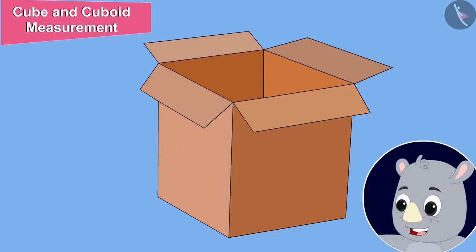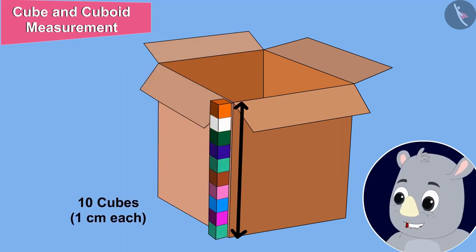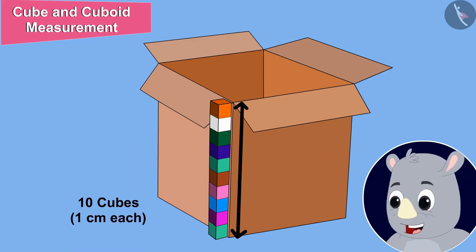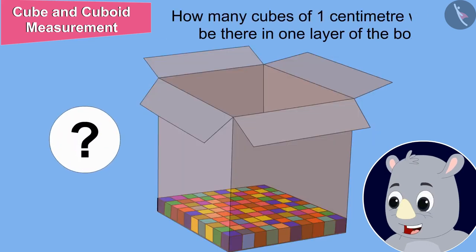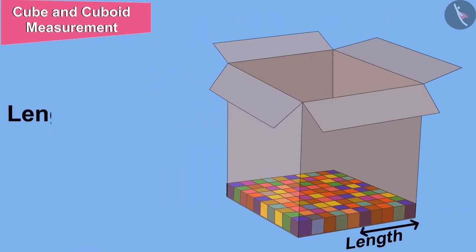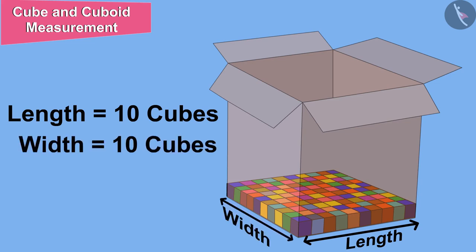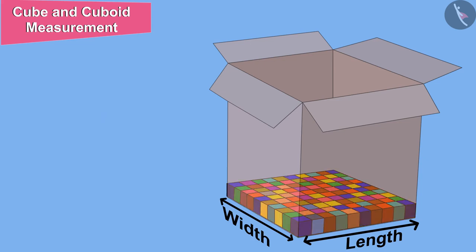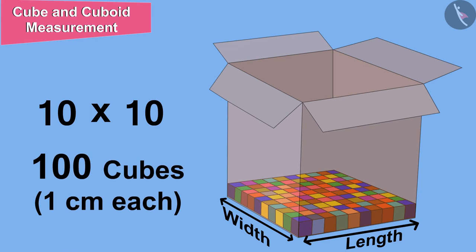That means the height of the box is equal to 10 cubes of dimension 1 cm each. Let's find out first how many cubes of dimension 1 cm would be there in one layer of the box. 10 cubes will come in the length of the box, and also 10 cubes in its width. It means one layer will have 10 times 10, or 100 cubes of dimension 1 cm each.